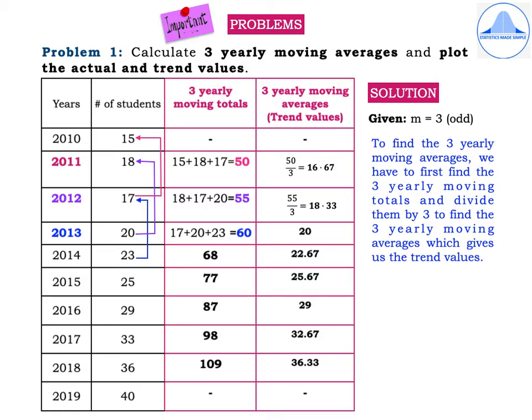The only remaining step is to find the three-yearly moving averages, which are the trend values. Divide each three-yearly moving total by 3. The first trend value corresponding to 2010 is missing. Then: 50 ÷ 3 = 16.67, 55 ÷ 3 = 18.33. You can round to two decimal places. Continue to get all other trend values: 20, 22.67, 25.67, 29, 32.67, and 36.33. The last trend value for 2019 is also missing.